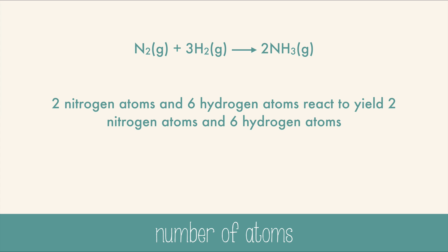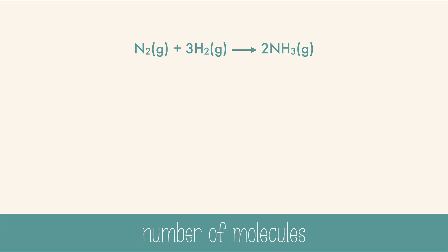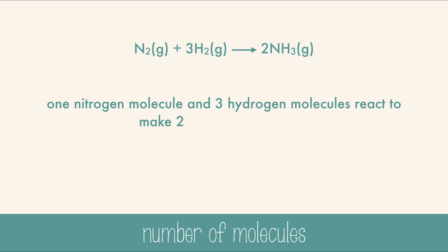Not that exciting. When you read the equation in terms of atoms it's easy to see that the number and types of atoms are not changed — they're conserved. Now in terms of molecules: one nitrogen molecule and three hydrogen molecules react to make two ammonia molecules.